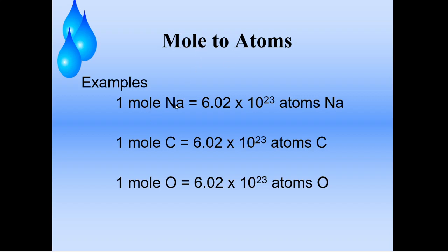Here are some examples. One mole of sodium — that's Na on our periodic table — is 6.02 times 10 to the 23rd atoms of sodium. We use this to make things comparable. Because sodium has a different weight on the periodic table, it still has 6.02 times 10 to the 23rd atoms. One mole of carbon will also have 6.02 times 10 to the 23rd atoms, and one mole of oxygen will again have 6.02 times 10 to the 23rd atoms.